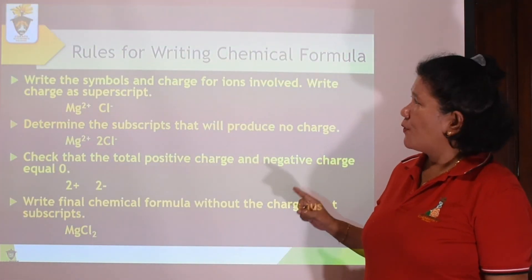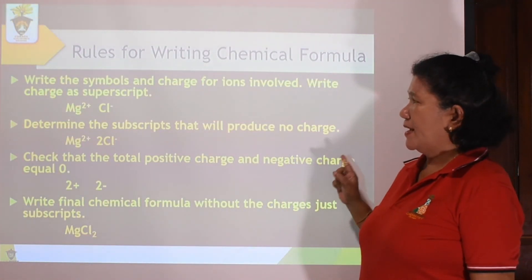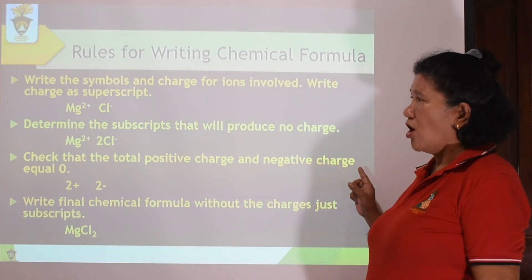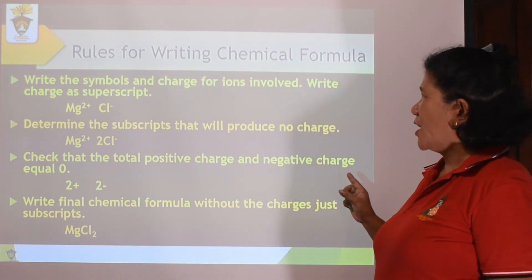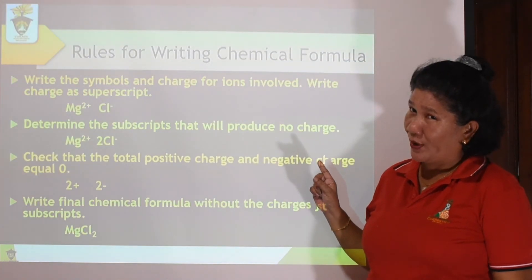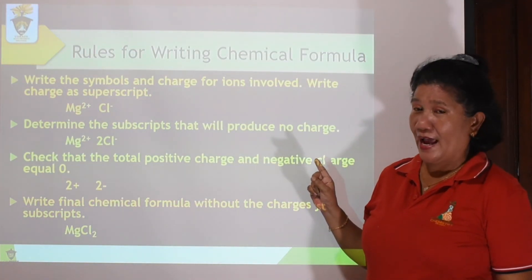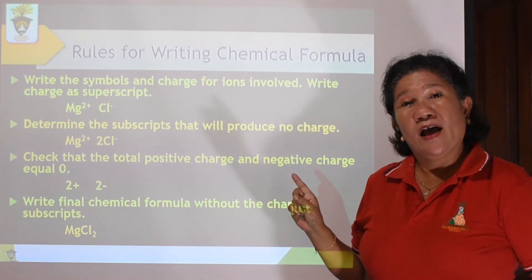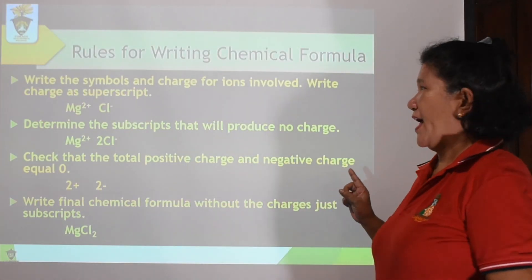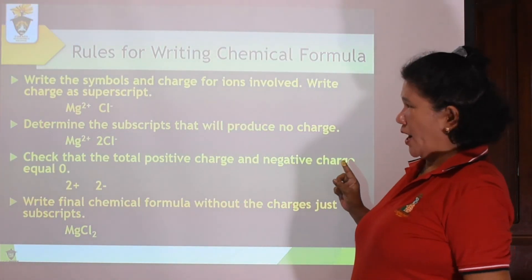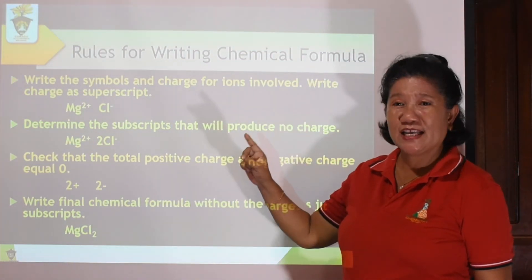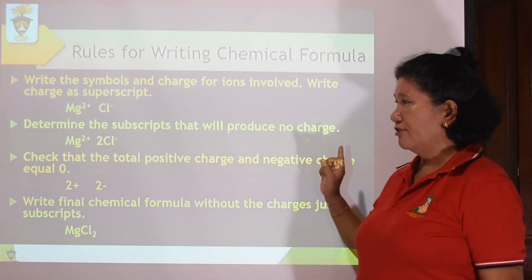The rules for writing a chemical formula: first, you are going to write the symbol charts of ions. We already know that ions bear either a positive or a negative charge. For instance, we have here magnesium and chlorine.